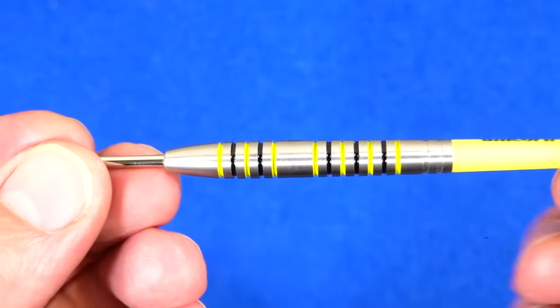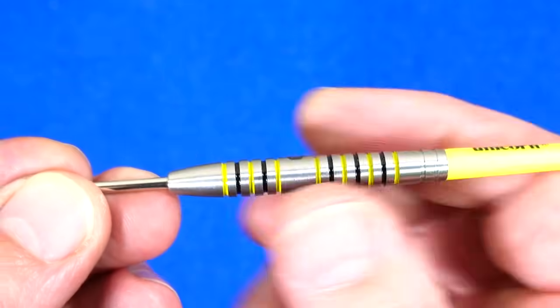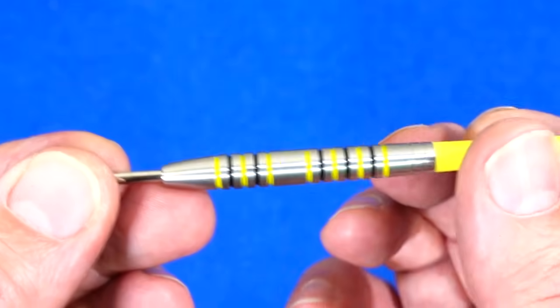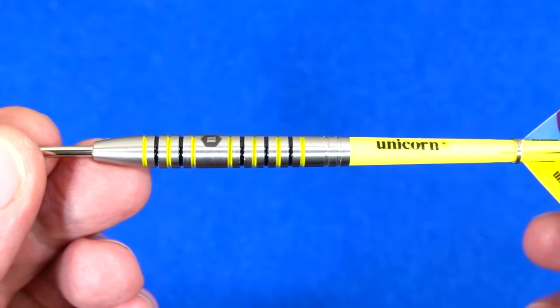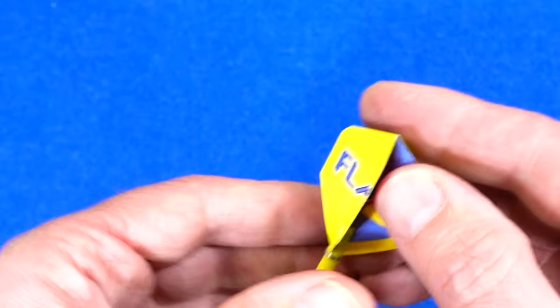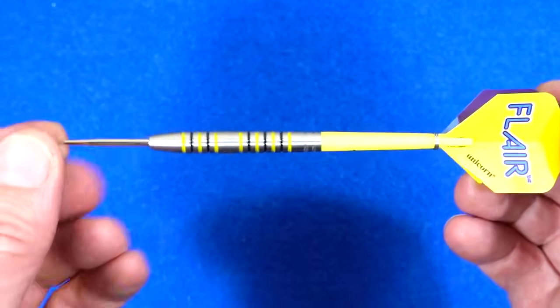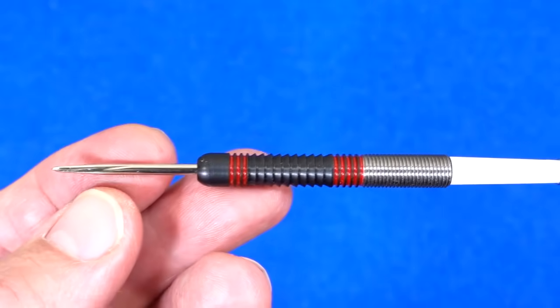And these are the Flare, a more simple style of barrel but some people do like very simple styles. And again with that black and yellow paint it looks quite a striking dart but I do like the flights on these, very colorful flights. So there you go, that's the Flare.